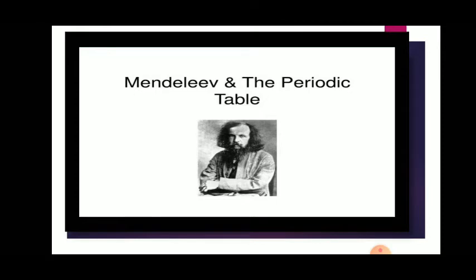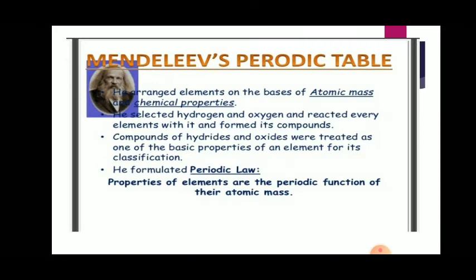Today we will see in detail about how he placed elements in a periodic table. Looking at Mendeleev's periodic table, let us revise some points. He arranged elements on the basis of atomic mass and chemical properties. Both earlier scientists also arranged elements according to atomic masses, but Mendeleev arranged elements on the basis of atomic mass as well as physical and chemical properties. He selected hydrogen and oxygen and reacted every element with them to form compounds.